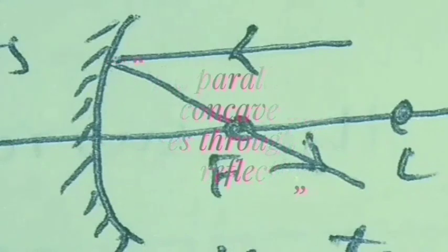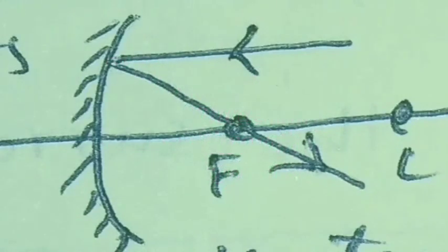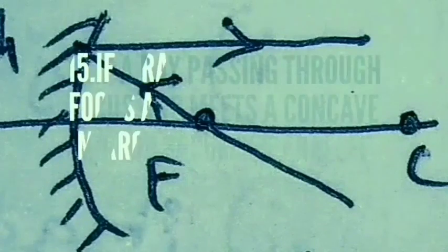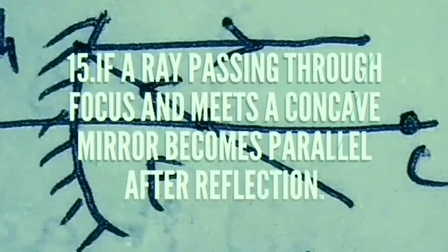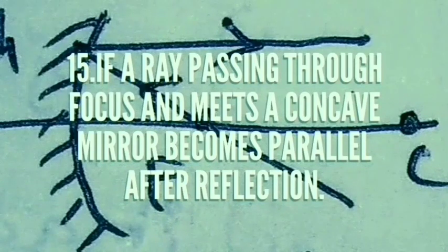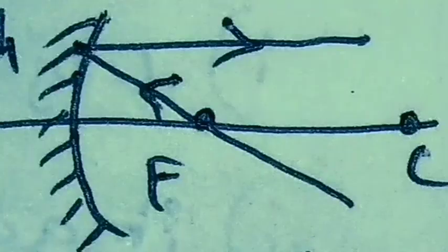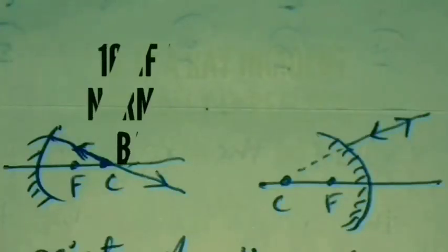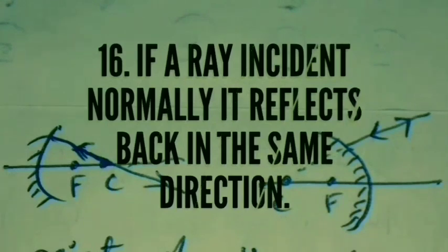If a parallel ray meets a concave mirror, it passes through focus after reflection. See background image to get an idea. If a ray passing through focus and meets a concave mirror becomes parallel after reflection. If a ray incident normally, it reflects back in the same direction. See background image.